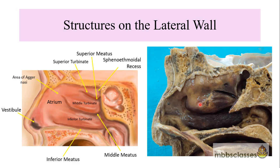Just behind the atrium lies the turbinates, also called conchae. There are three turbinates. This is the inferior turbinate, this is the inferior meatus, this is the middle turbinate, and just beneath is the middle meatus and the superior turbinate. This is the area of the sphenoethmoidal recess. There are other important anatomical relations including the agger nasi cells, which are located just in front of the middle turbinate, forming a soft tissue bulge.